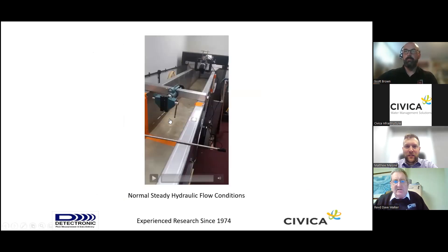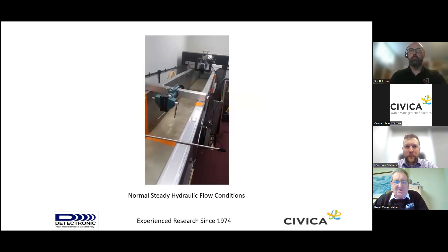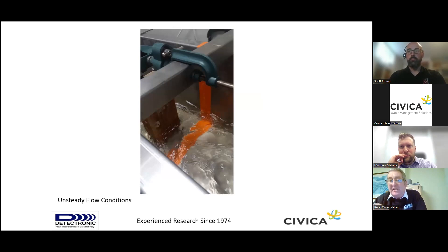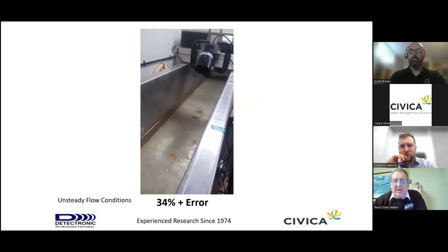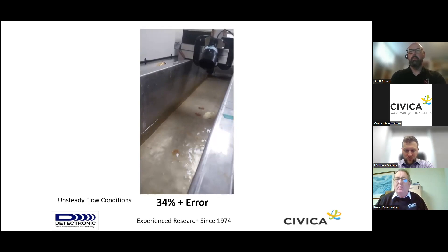On the next slide, I'm going to show some limitations using video of changing surface conditions for radar measurement. This is on a test rig at Detectronic. With normal, steady hydraulic flow, we were getting plus or minus 5% error from the radar device. When we put an obstruction just upstream to give a bit more turbulence on the surface ripple, you can see that a change in the velocity profile created an error of 34%. These are great technologies, but we need to know where the limitations lie, and as long as we work within those limitations, we can get some really good flow measurement.